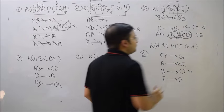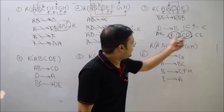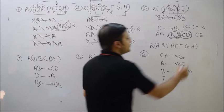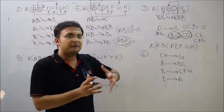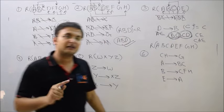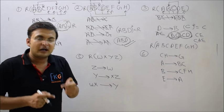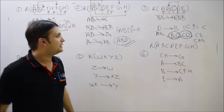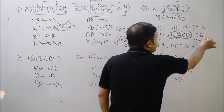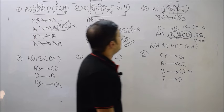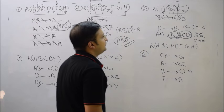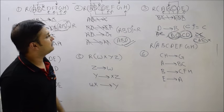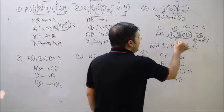So we have confirmed BC and CD are candidate keys. Now, should I check larger combinations like ACE? No — any combination containing BC or CD is already a super key, not a minimal candidate key. And combinations like AC or CE have been shown not to be keys. Therefore there are exactly two candidate keys: BC and CD.